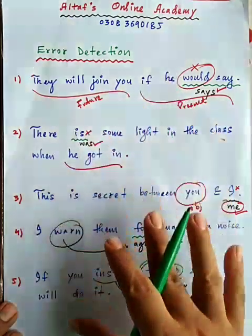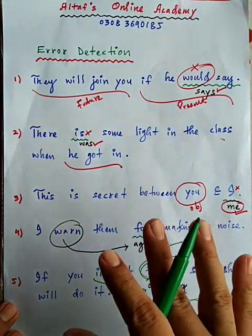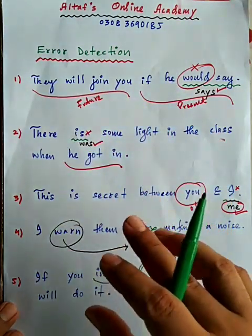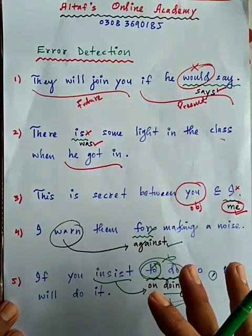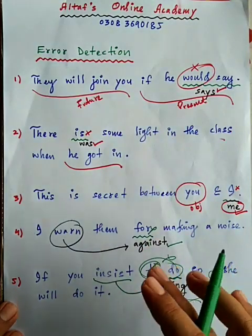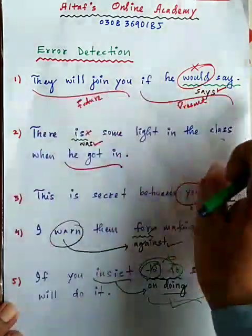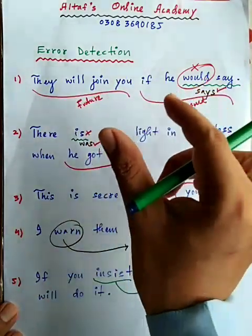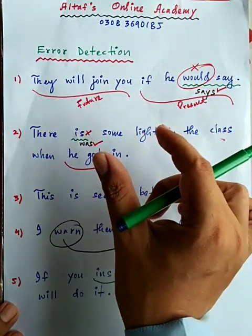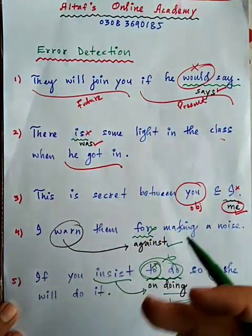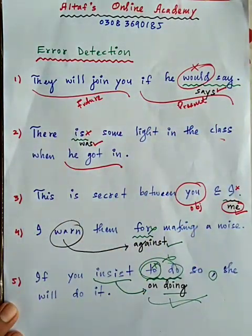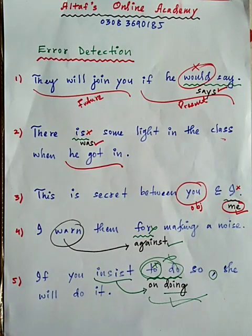تو یہ پانچ types of sentence structures تھیں جن کو آپ کو سمجھایا۔ انہیں زیادہ سے زیادہ practice کریں۔ یہ different types of structures ہوتی ہیں — ایک sentence نہ سمجھیں، یہ ایک type of structure ہے۔ جتنا ہو سکے practice کریں تاکہ exam میں فائدہ ہو۔ Thank you very much آج کے lecture میں، انشاءاللہ اگلے lecture میں آگے چلیں گے۔